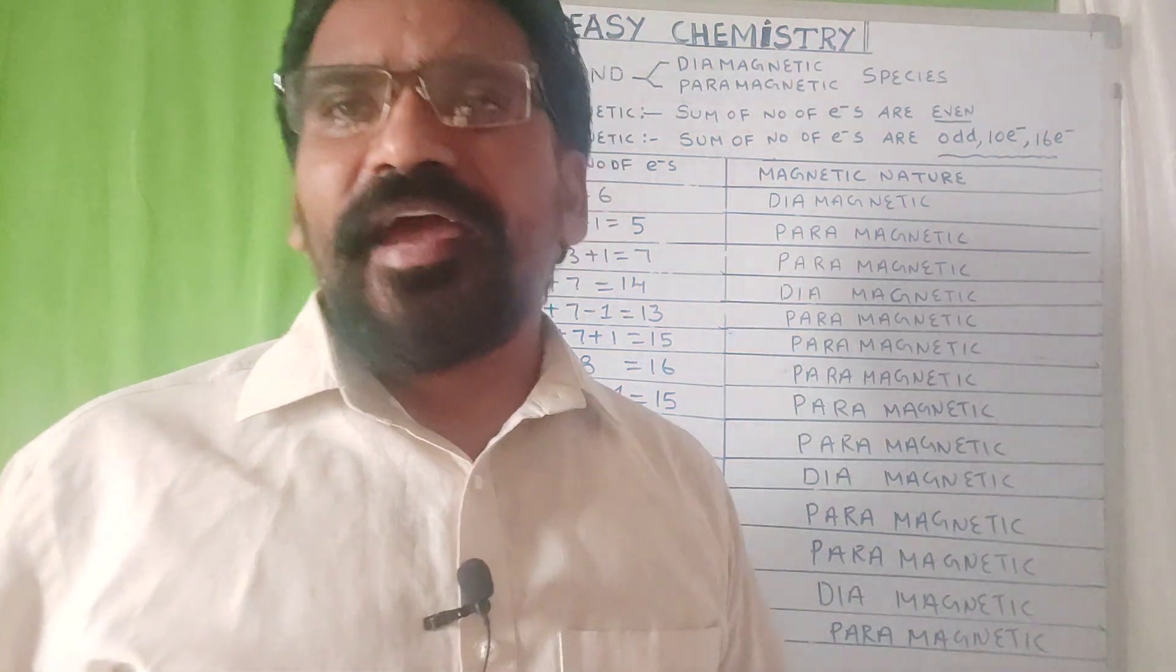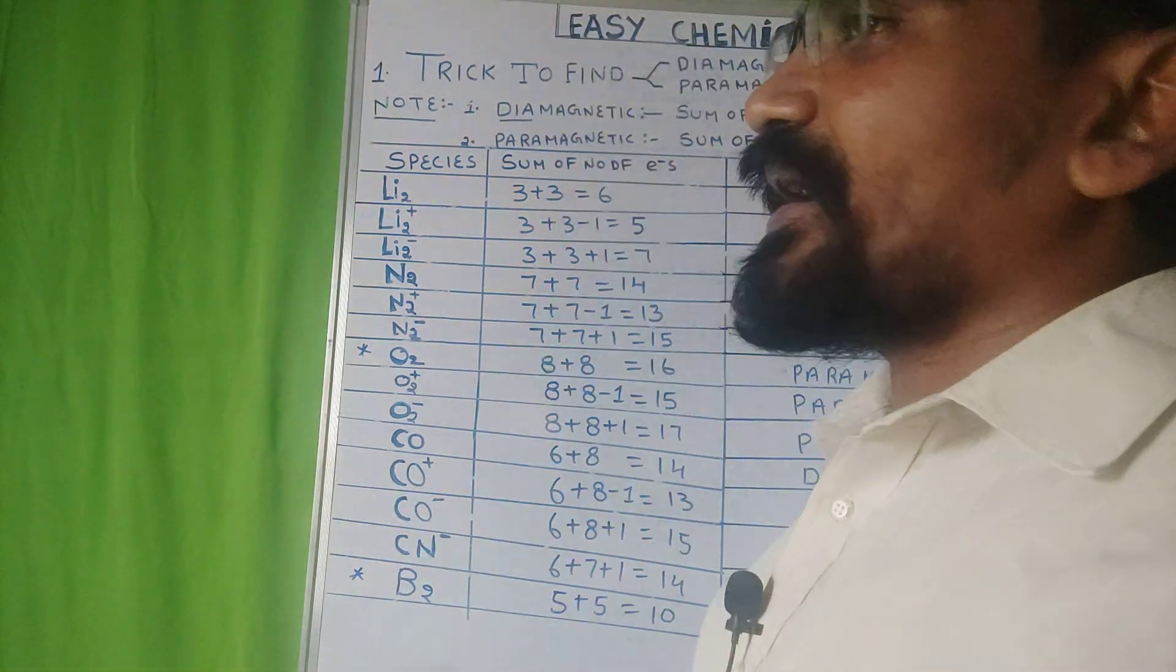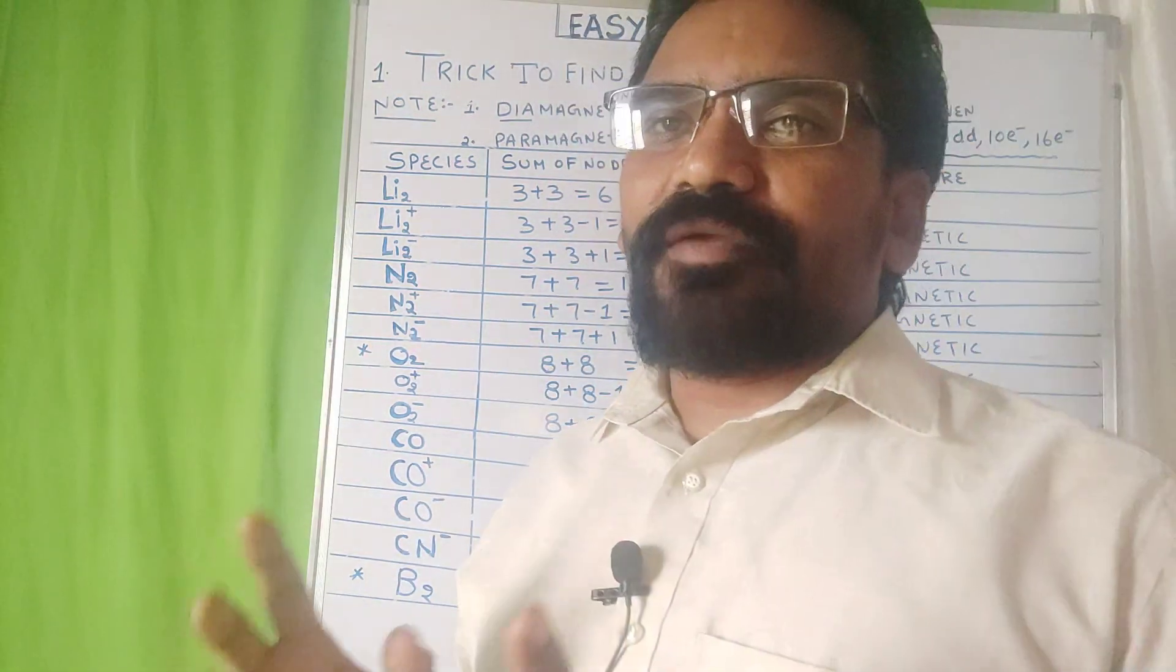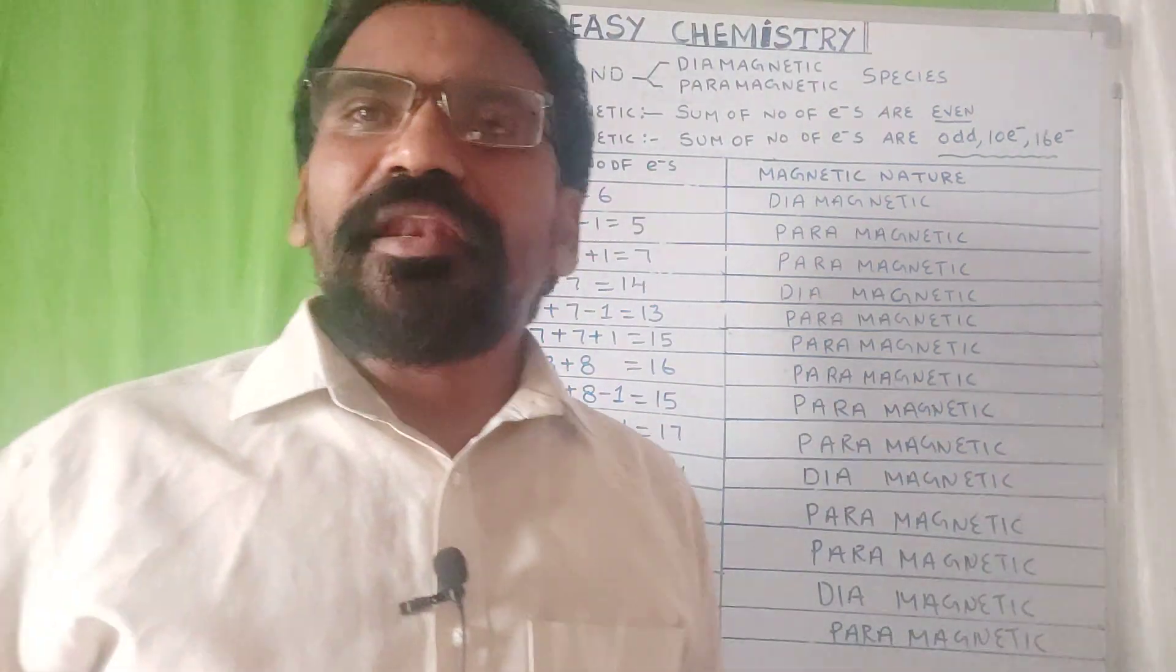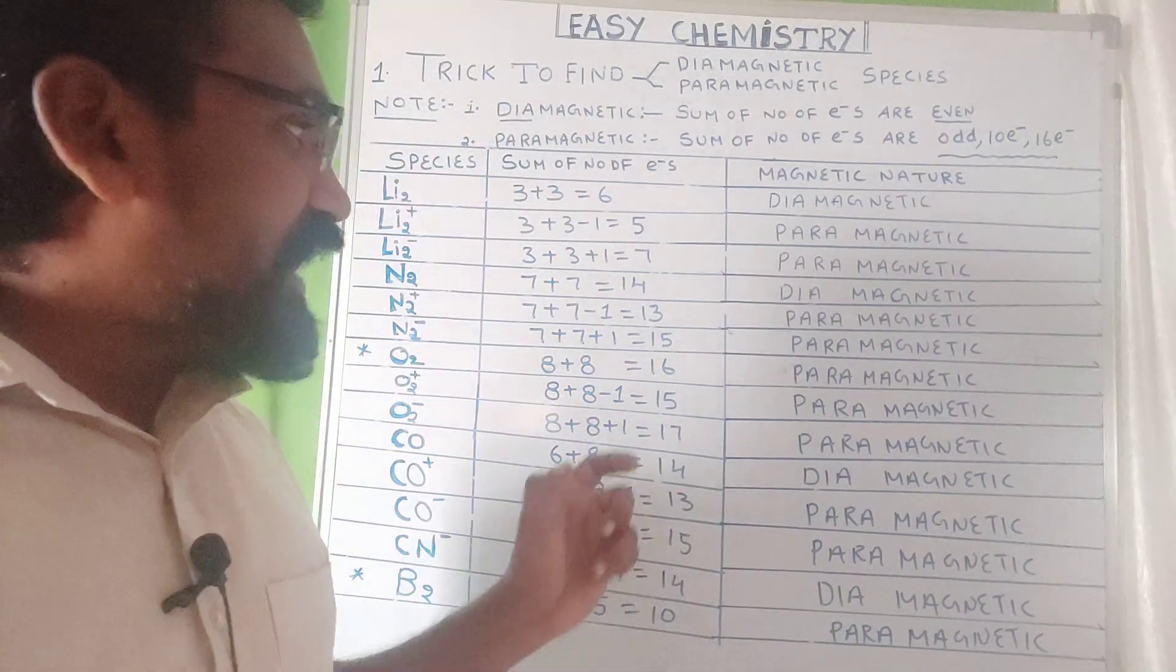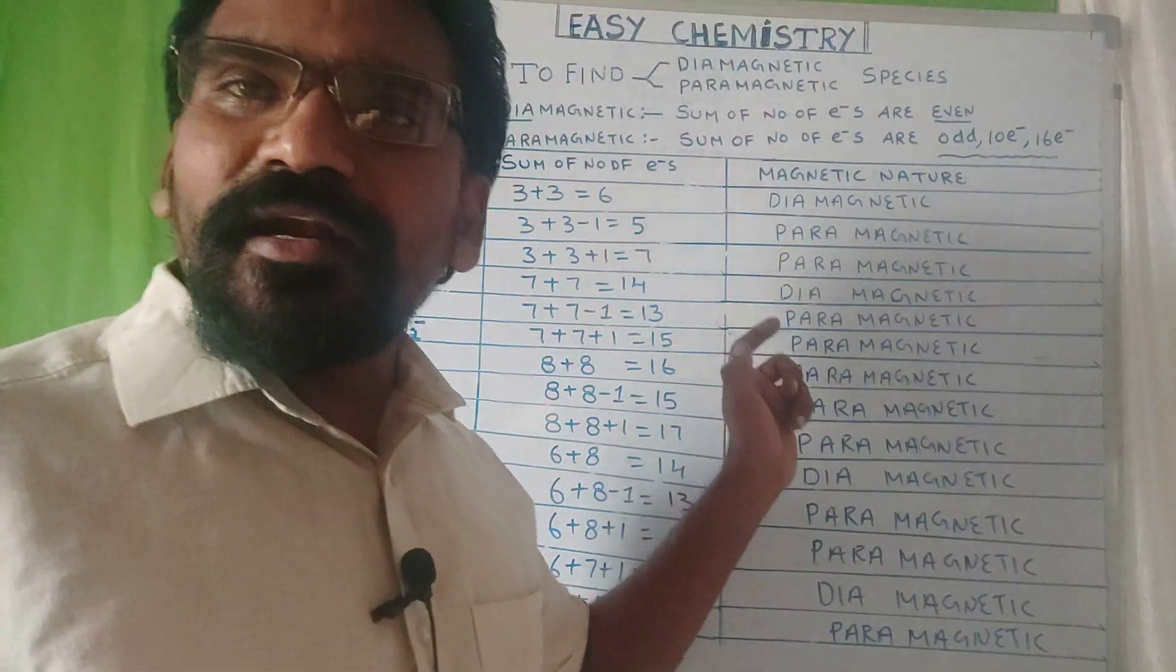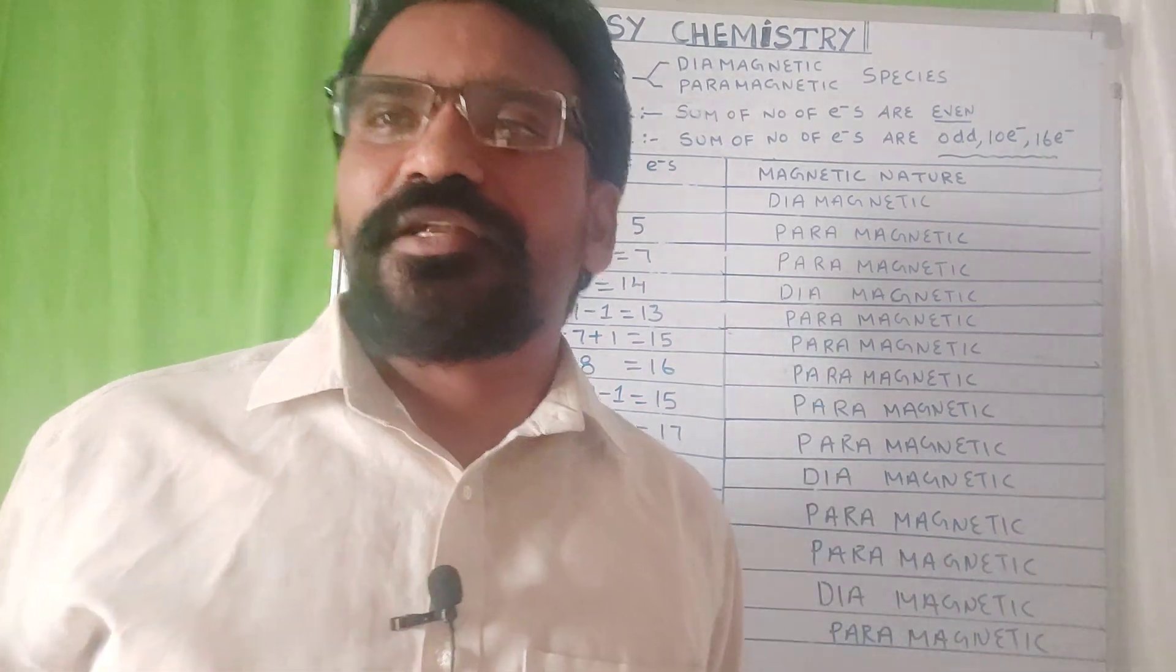In this way, we have to find paramagnetic and diamagnetic in a simple way. Please practice remaining species like this and identify which is paramagnetic and diamagnetic. Thank you for watching.